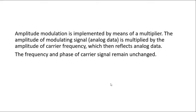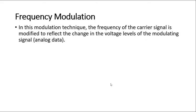In frequency modulation, the amplitude of the carrier signal remains unchanged. The frequency of the carrier signal is modified to reflect the change in voltage level of the modulating signal, where the modulating signal carries the analog data.